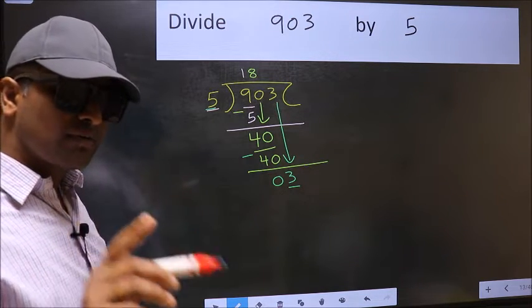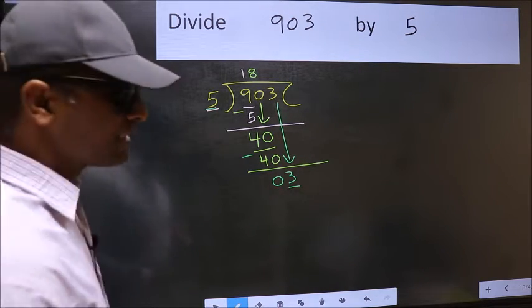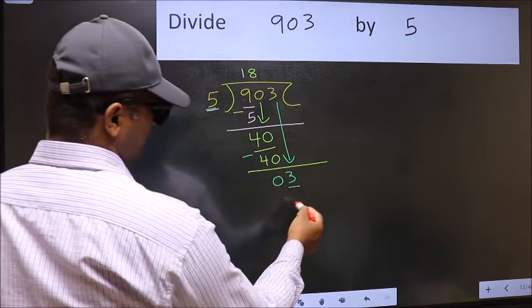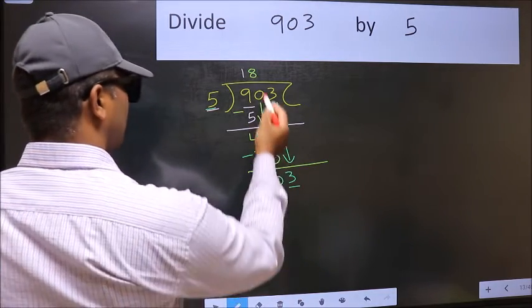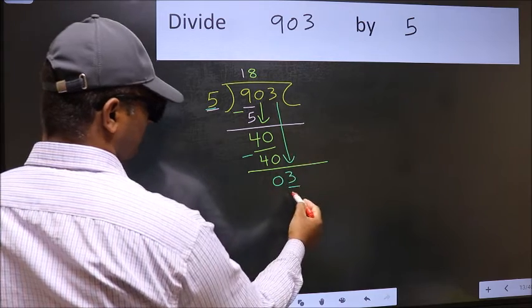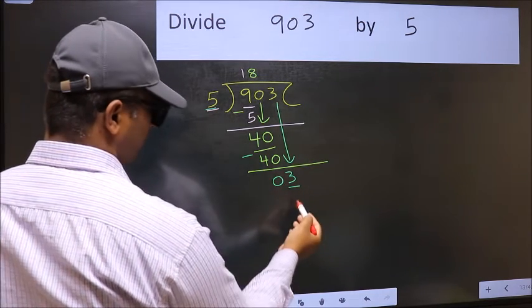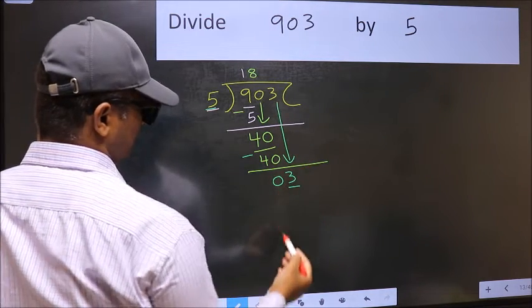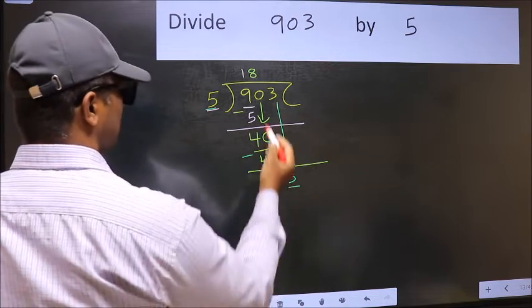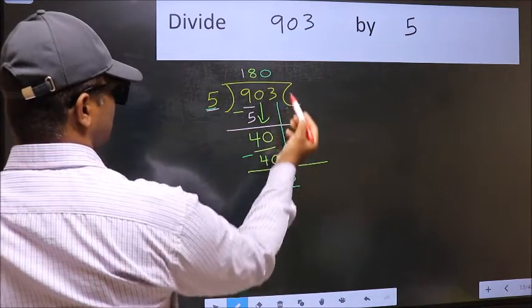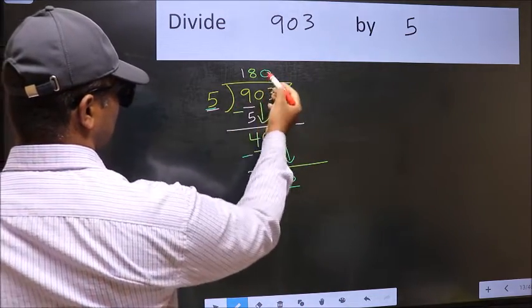Instead, what you should think of doing is, what number should we write here? If I take 1, we will get 5. But 5 is larger than 3. So what we should do is, we should take 0. So 5 into 0, 0.